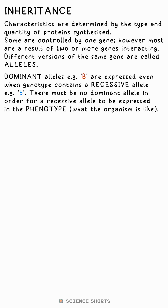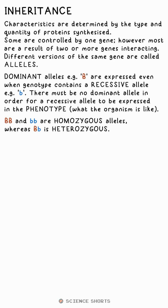Dominant alleles are those that result in a characteristic being expressed even if there is another allele present — a recessive allele. For example, if you have the alleles big B, little B for eye color, big B being brown and little B being blue, you will have brown eyes.